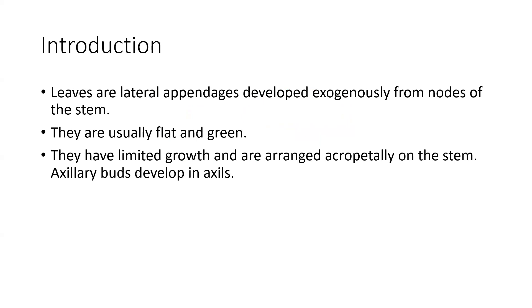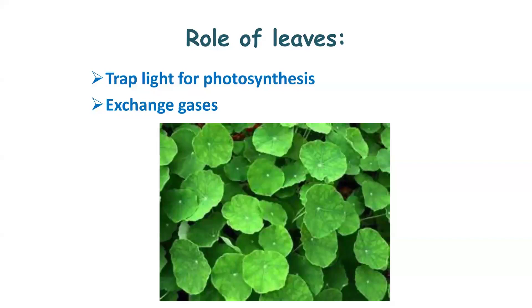Leaves are the lateral appendages which are developed exogenously from the nodes of the stem. The main function of leaves is photosynthesis. These leaves are usually flat and green in color, have limited growth, and are arranged appropriately on the stem. Sometimes axillary buds develop in axils. The main functions are to trap light for photosynthesis and to help in exchange of gases.